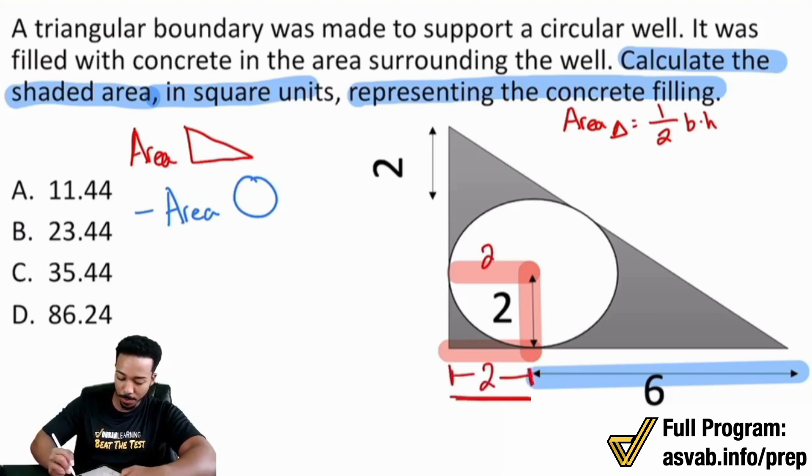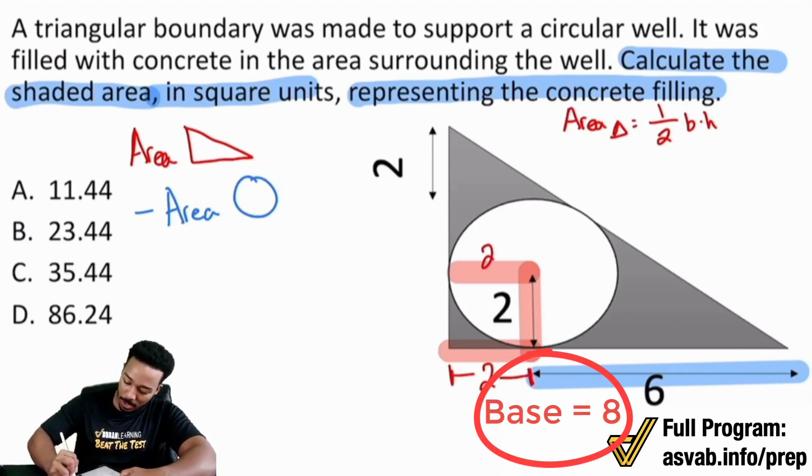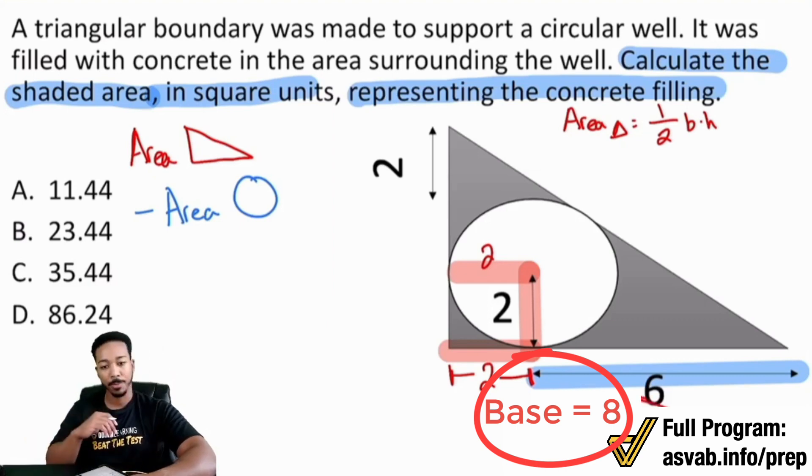And so if you see here, they label the distance from the center to the end here as two, which means the center to the end here is also two, which is pretty interesting here because it gives us a good opportunity to figure out what that base is. Because again, if this is two and this over here is six, then what's the base going to be? Eight. That's correct. So my base here is eight. My base here equals eight.